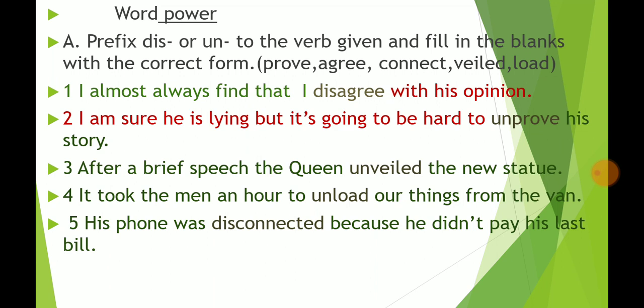On your screen, the first word in the bracket is 'prove.' With the prefix dis- or un- we change its meaning. 'Agree' becomes 'disagree' — asahmat. 'Connect' becomes 'disconnect.' We have used disagree with this word — disagree means asahmat. Now look at our sentence: 'I almost always find that I disagree with his opinion,' means I am asahmat from his way of thinking.